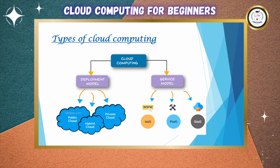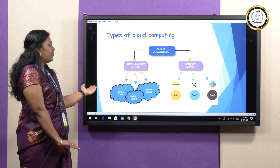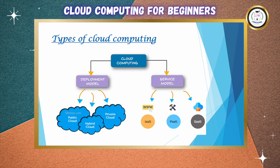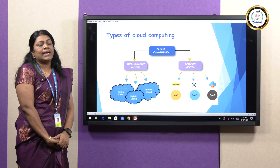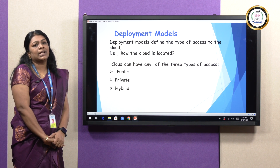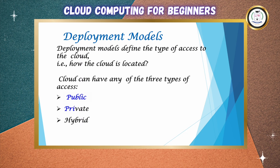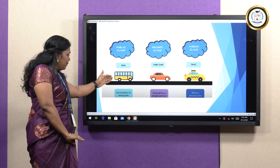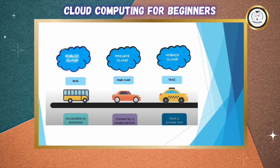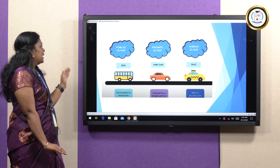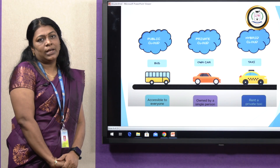Next, types of cloud computing. Cloud computing can be mainly classified according to deployment and service. According to deployment, cloud computing can be classified into public, hybrid, and private. According to the service model, it is classified into IaaS, PaaS, and SaaS. Depending on the access, we classify cloud computing into three: public, private, and hybrid. Public means — in a real-life example — when we use a public bus, it is very cheap but security is less. Like that, in public cloud, everyone can access the cloud.